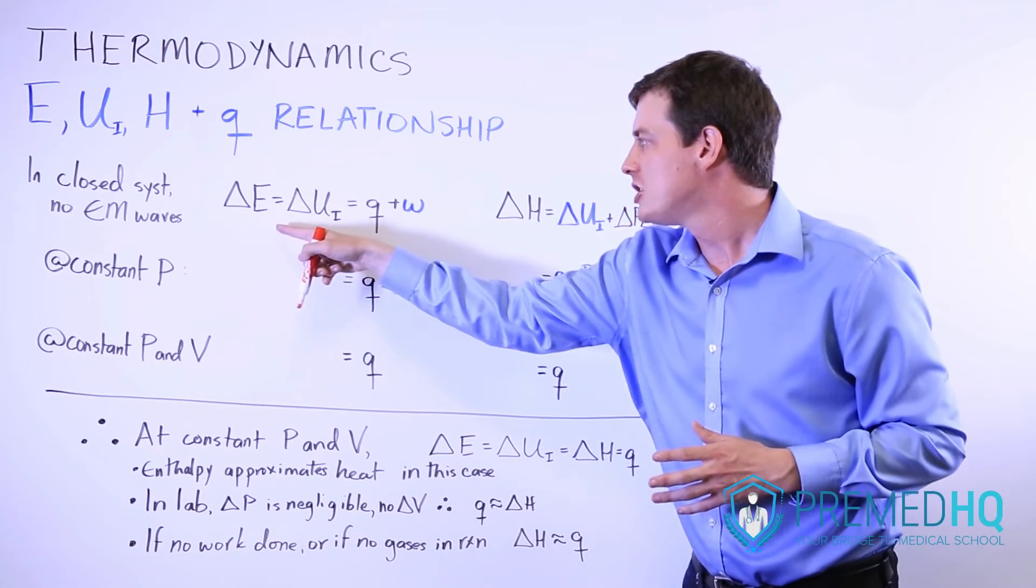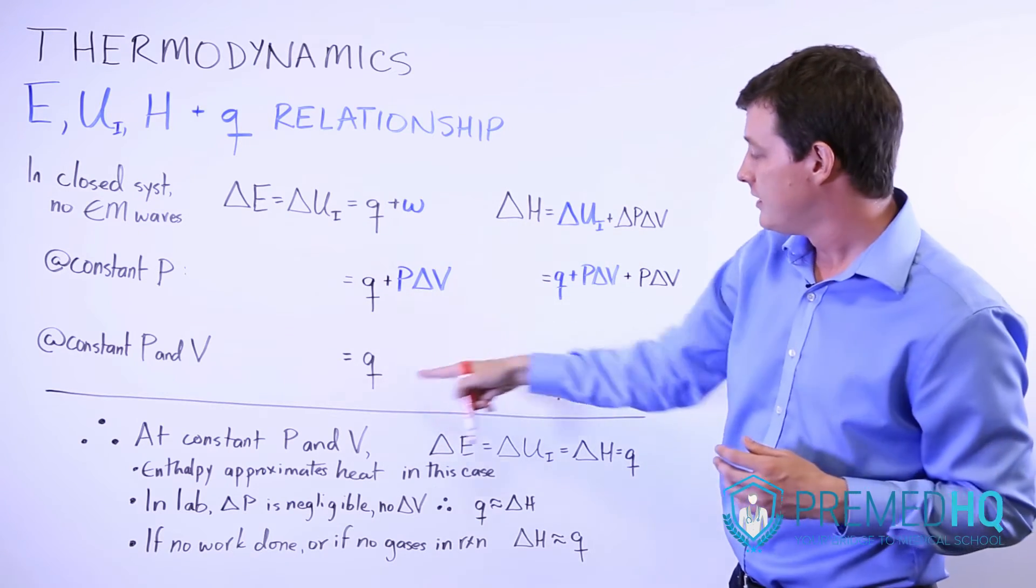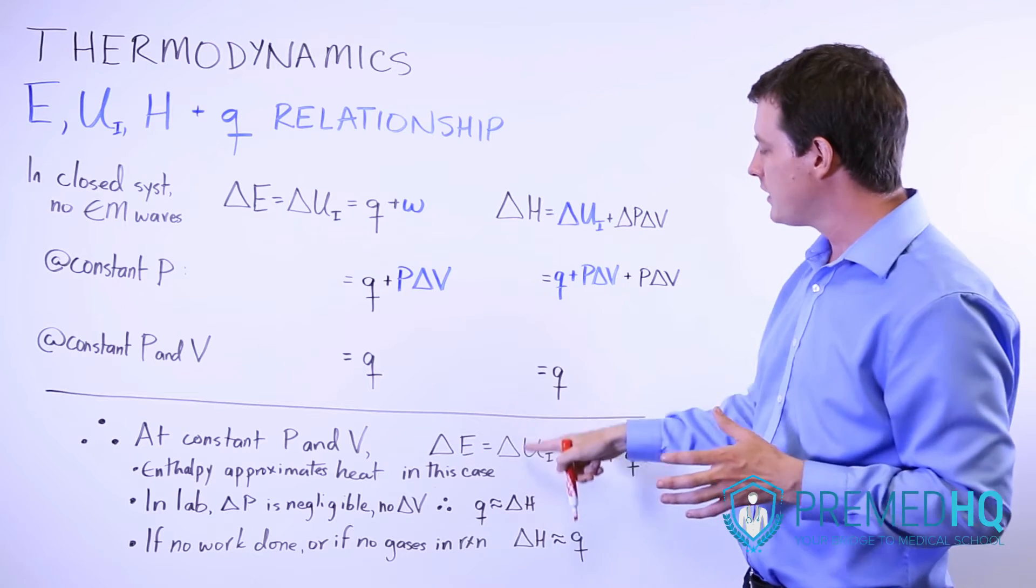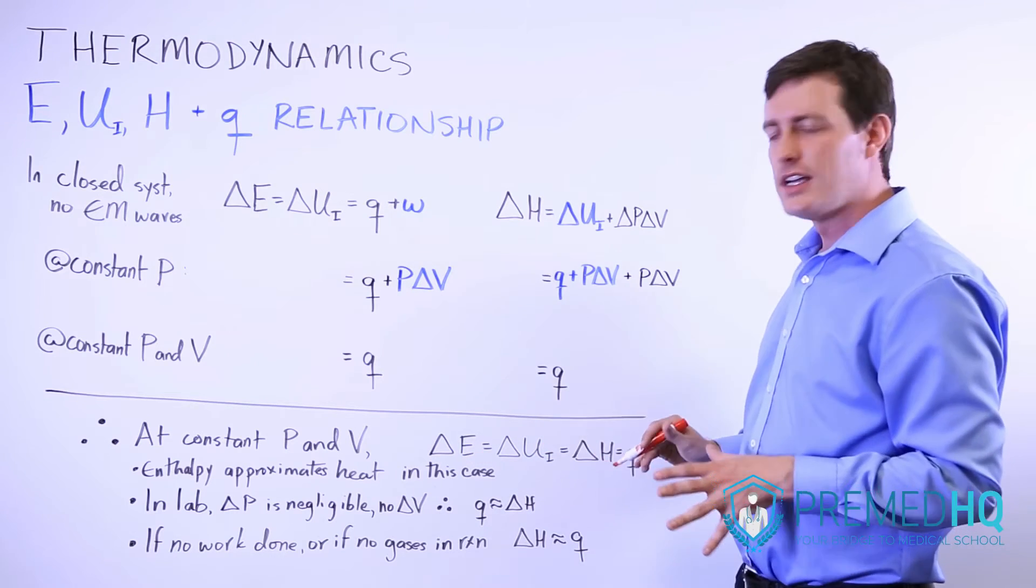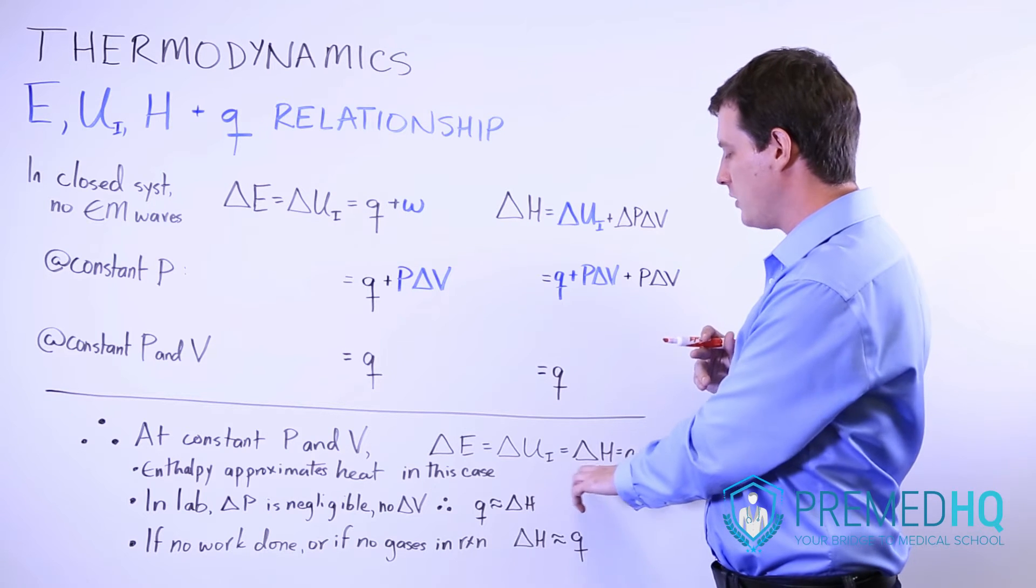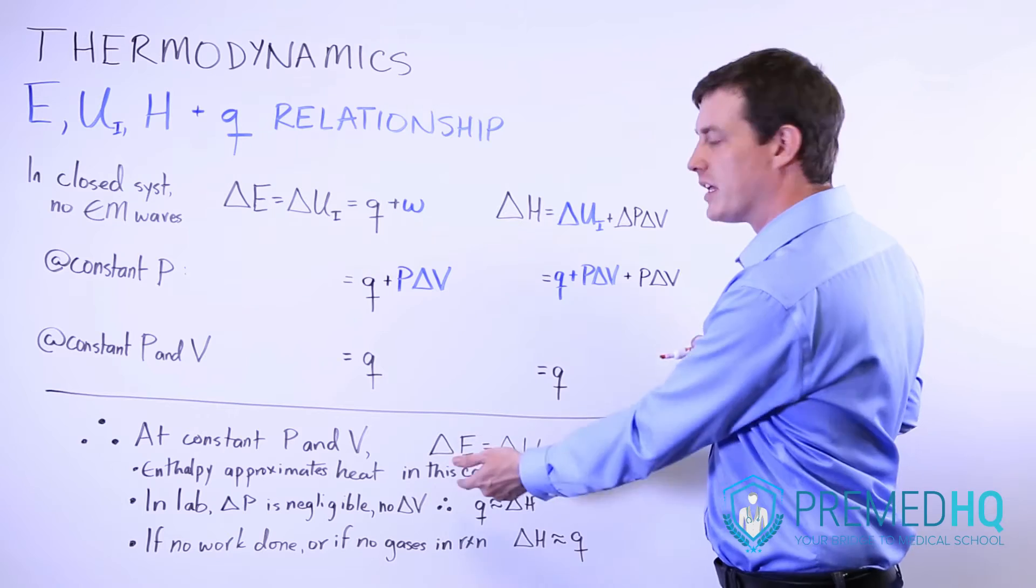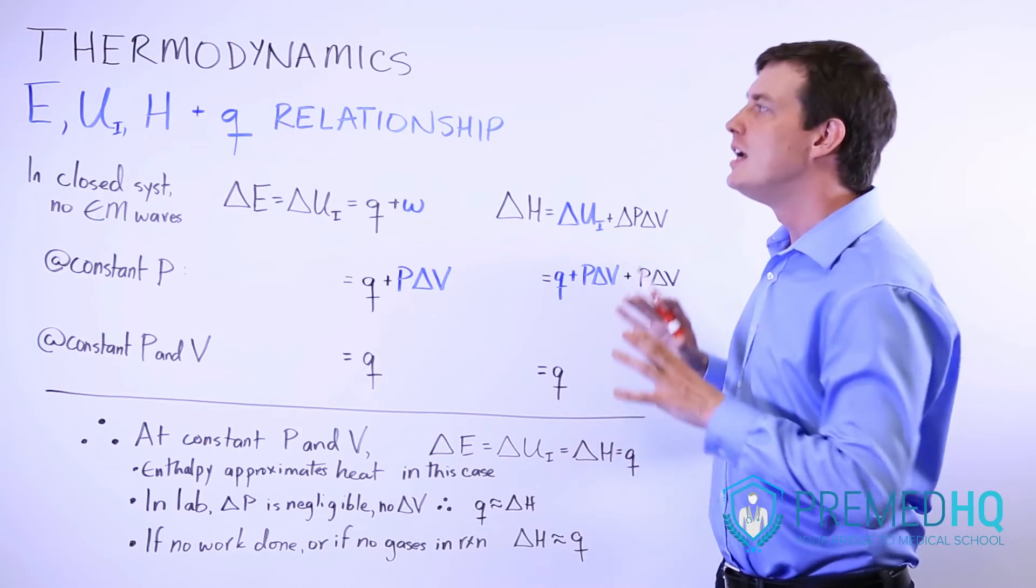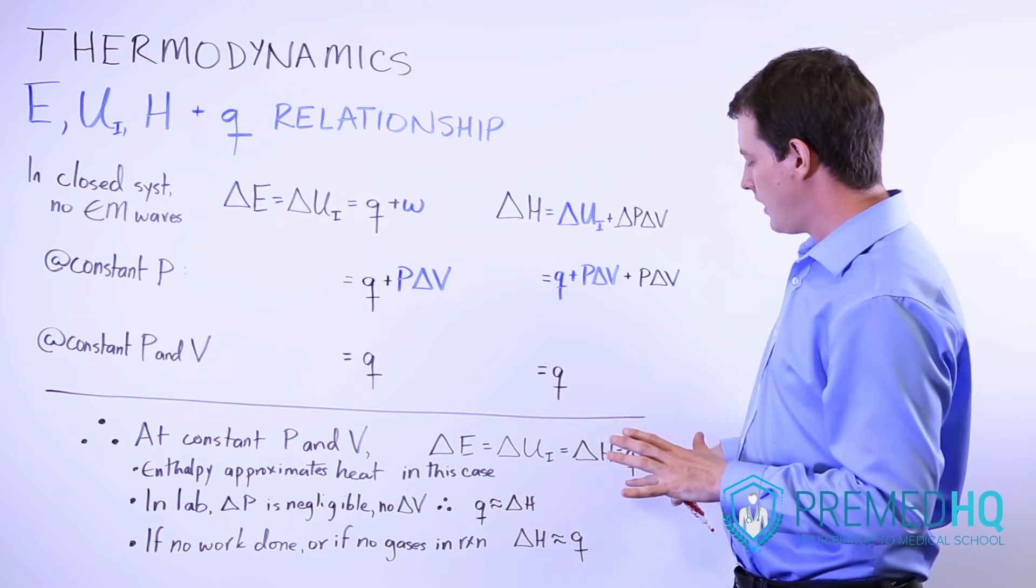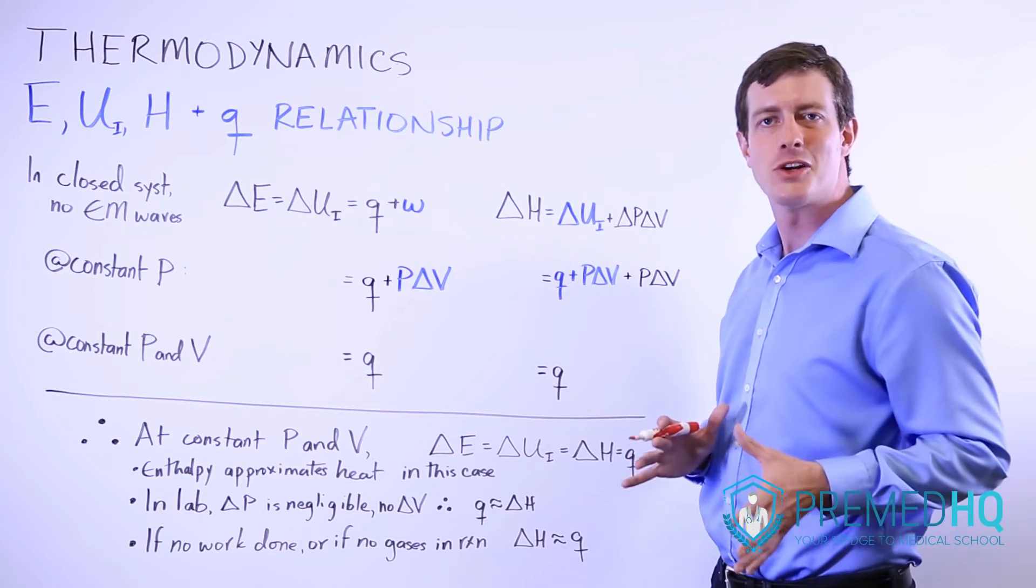Change in energy is equal to the change in internal energy, and that's equal to heat. Heat is also equal to the change in enthalpy. So all of these things are equivalent, and you can use heat in place of enthalpy, and you can use enthalpy in place of energy. In some thermodynamics problems, it's very acceptable to use heat as enthalpy, to use enthalpy as energy, and so on.